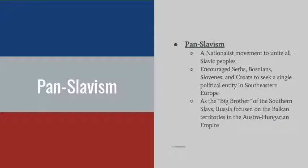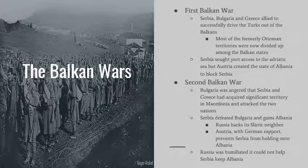Pan-Slavism encouraged Serbs, Bosnians, Slovenes, and Croats — all living within Austria-Hungary — to seek a single political entity in Southeastern Europe. Russia, as the big brother of the Southern Slavs, focused on the Balkan territories of the Austro-Hungarian Empire, encouraging them to seek independence. The main impact of Pan-Slavism occurred in the Balkans, where non-Slavic empires like Austria-Hungary and the Ottoman Empire had ruled the South Slavs for centuries. The Balkans are known as the powder keg of Europe, because this is where things really began to heat up right before the Great War.